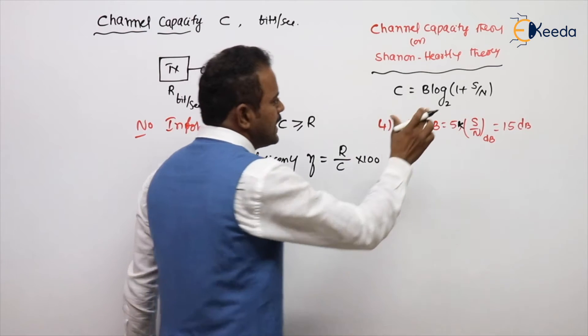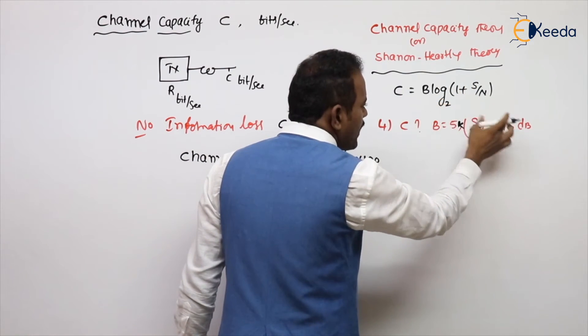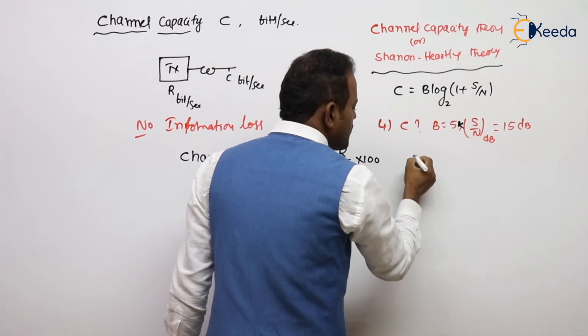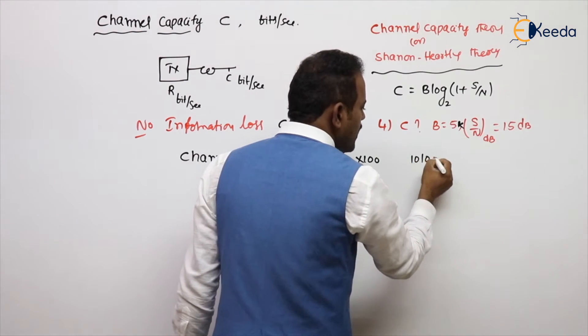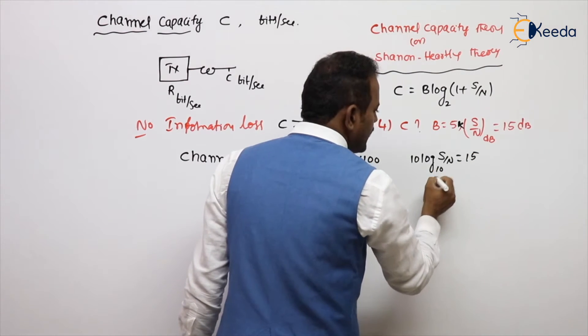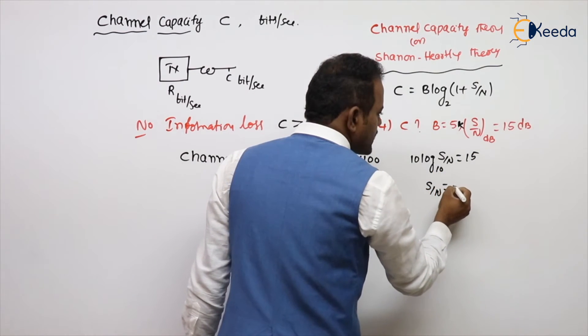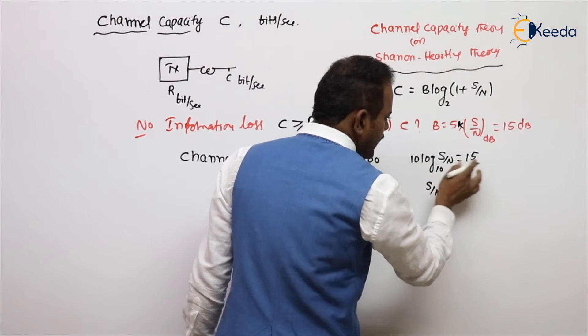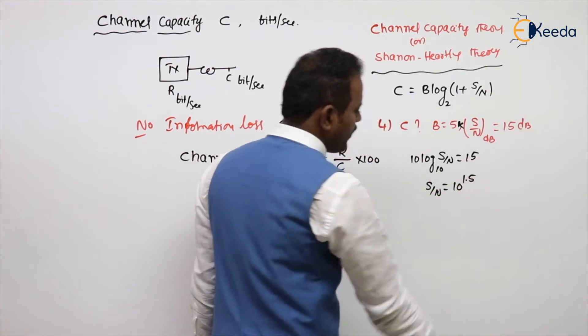Why? Because this value is normal, not in decibels. Decibels means signal to noise ratio, that is 10 log S by N value is 15, then S by N value is 10 to the power 1.5.